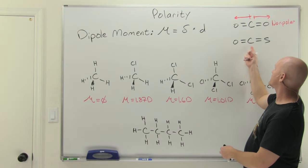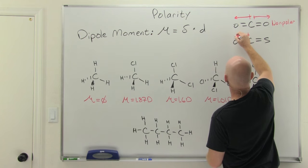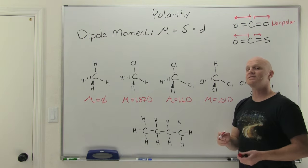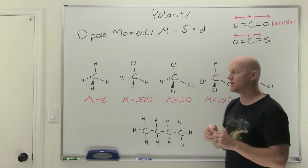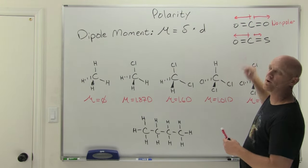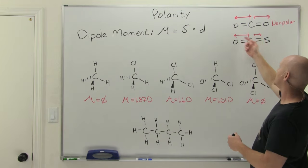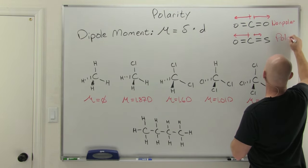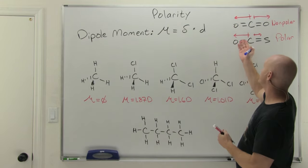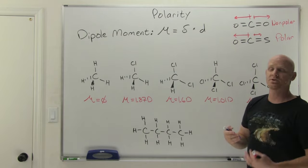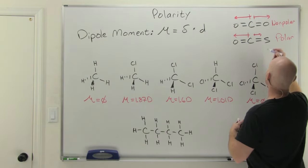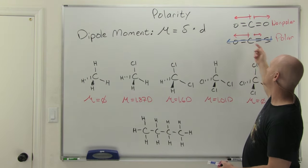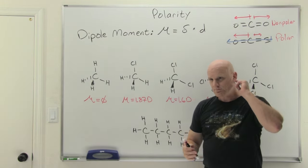Now if you look at a very similar molecule where one of the oxygens is replaced by a sulfur: the carbon-sulfur bond has a smaller difference in electronegativity, leading to a less polar bond. Because the two bond dipoles are not equal in polarity — I've drawn a smaller arrow on purpose — they're not going to add up to zero. As a result, this molecule is polar overall, with a dipole moment pointing toward the oxygen. You can draw those individual bond dipoles and then an overall molecular dipole in blue.